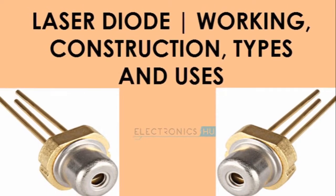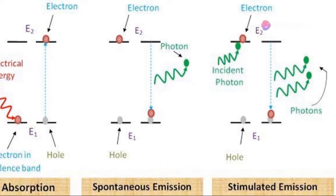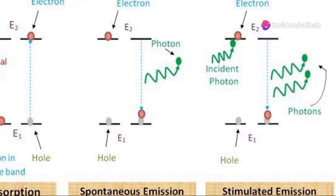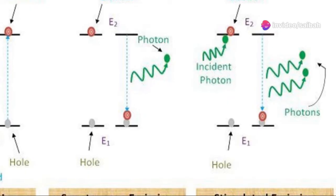So how does a laser diode work? There are three key phenomena involved: absorption, spontaneous emission, and stimulated emission. Let's break it down.